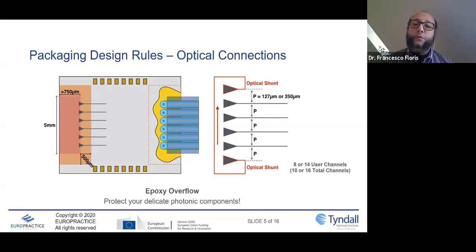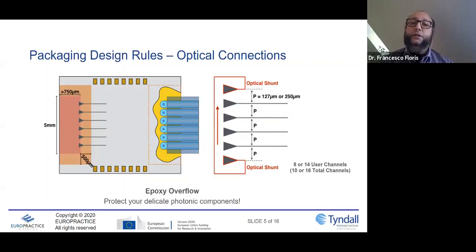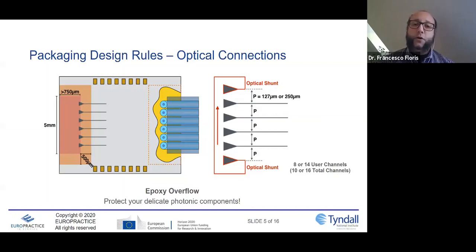The same concept can also be applied for edge coupling. From the practical point of view, this means that when you choose a fiber array, two lines cannot be used for the specific purposes of your circuit. For example, if you want to use 8 or 14 channels, you need to buy a 10 or 16 total channel fiber array. This is because we need two of the total channels to align the optical fibers with respect to the grating couplers or edge couplers.